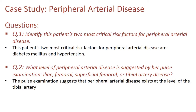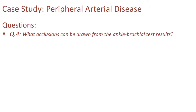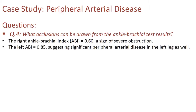Question four: what conclusions can be drawn from the ankle brachial test results? The right ankle brachial index is 0.6, which is a sign of severe obstruction — the circulation to the lower limb is very much reduced. On the left side, the index is 0.85, which suggests significant peripheral arterial disease also in the left leg.